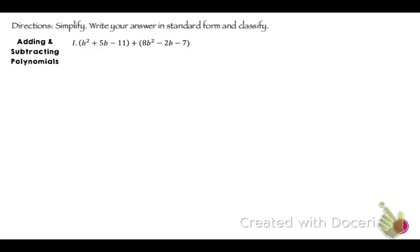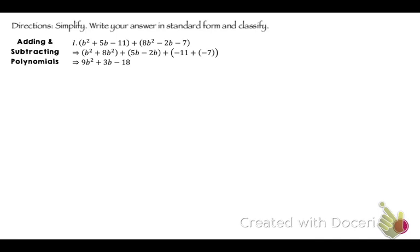Adding and subtracting polynomials — you're just combining like terms. So we're going to combine our b squareds, our b's, and our constants. b squared plus 8b squared is 9b squared. 5b minus 2b is 3b. Negative 11 plus negative 7 is negative 18.